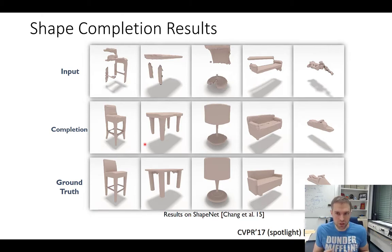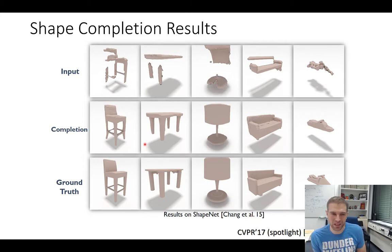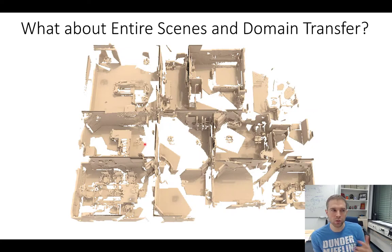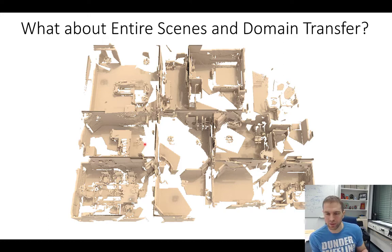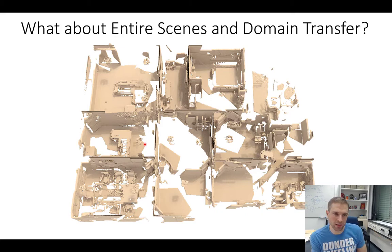We can train generative networks on 3D data, but the challenge is that these things right now mostly work on ShapeNet — one of the few available synthetic 3D model datasets — and getting this to work on real data is a whole different challenge. With real 3D scenes, you have to figure out how to operate on large volumes with arbitrary dimensions, not a fixed-size 2D array. You can use fully convolutional networks in 3D, train on chunks, and apply across entire scenes.